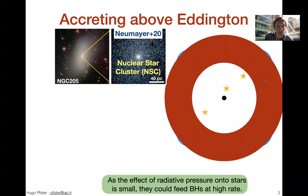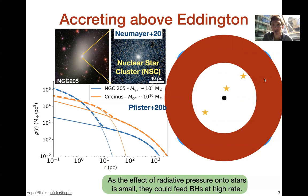If you look in the center of galaxies — here is an image from observation where you zoom on a close galaxy — you see that in the center there is a very overdense region which we call the nuclear star cluster. Several models, such as this plot from my recent paper, show that you have an overdensity of orders of magnitude in the center of galaxies. So maybe due to stars we could grow black holes at a higher rate.